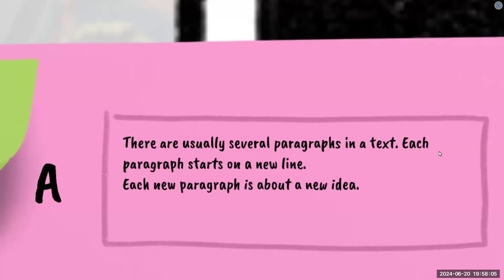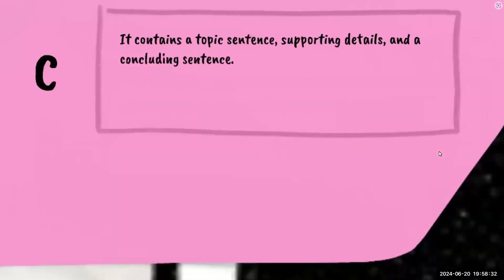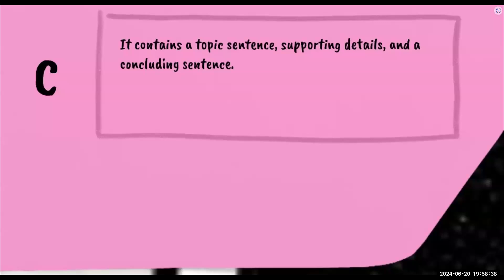So each paragraph, no matter how long or short it is, expresses a new idea. A paragraph is a group of sentences that revolve around a central idea, which means there's one main idea and every sentence in that paragraph talks about that idea. It contains a topic sentence, supporting details, and a concluding sentence. Every paragraph has a topic sentence, supporting ideas, and a concluding statement.